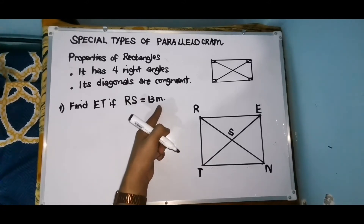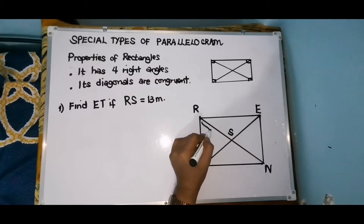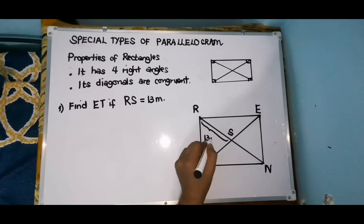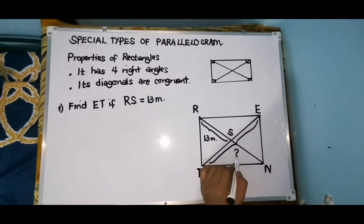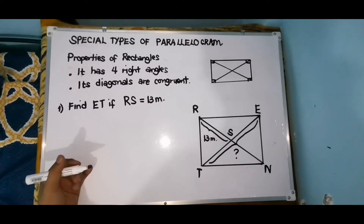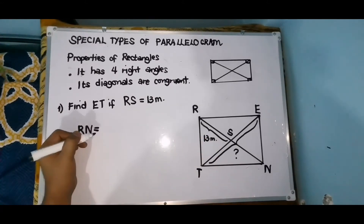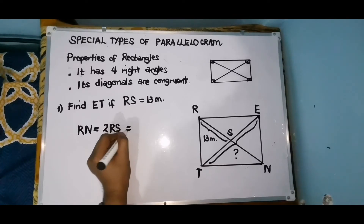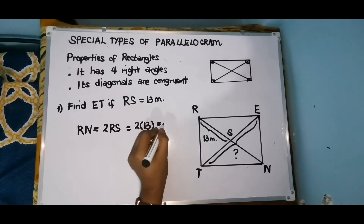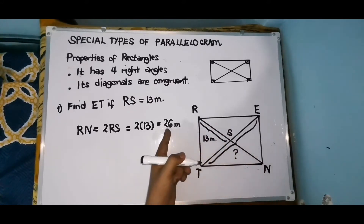Ito yung kanyang ating illustration. We are going to look for the measurement of BD. We're given that RS is 13 meters. Ngayon, hahanapin natin ang measurement ni BD. Find the measurement of BD. Since the diagonals of a rectangle bisect each other, therefore RN is equal to 2 times RS — that is 2 times 13 meters — we have here 26 meters. Ang measurement ng kabuan, itong RN ay 26 meters.